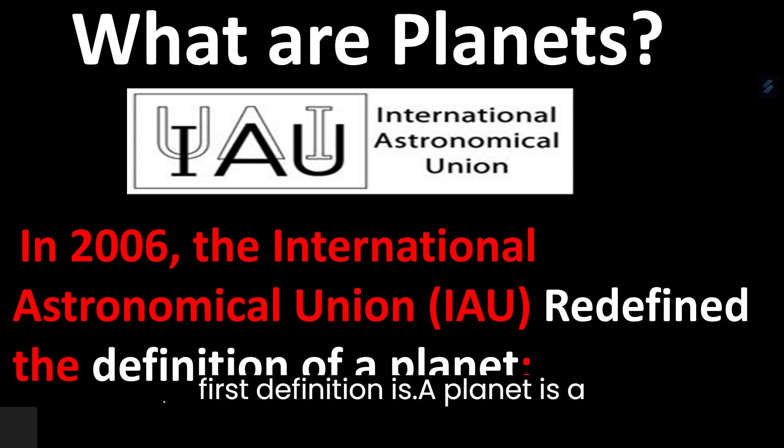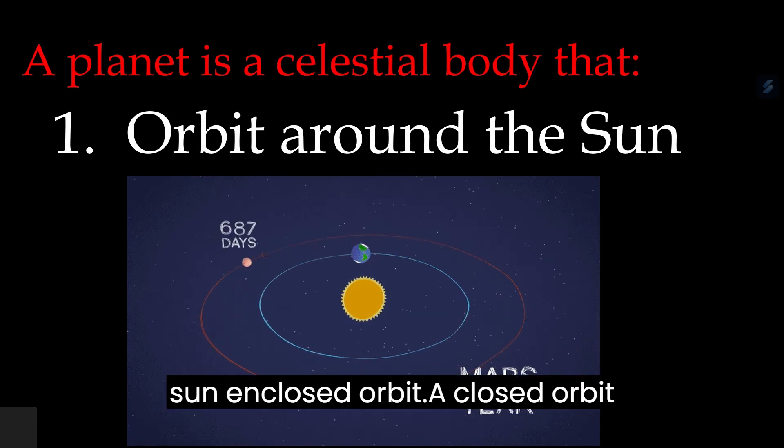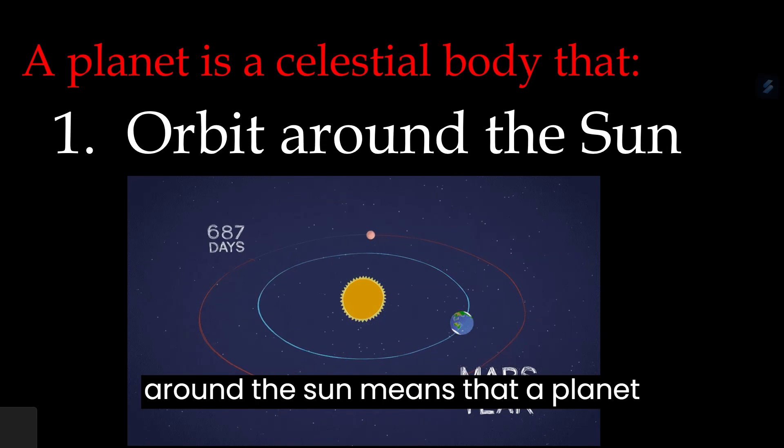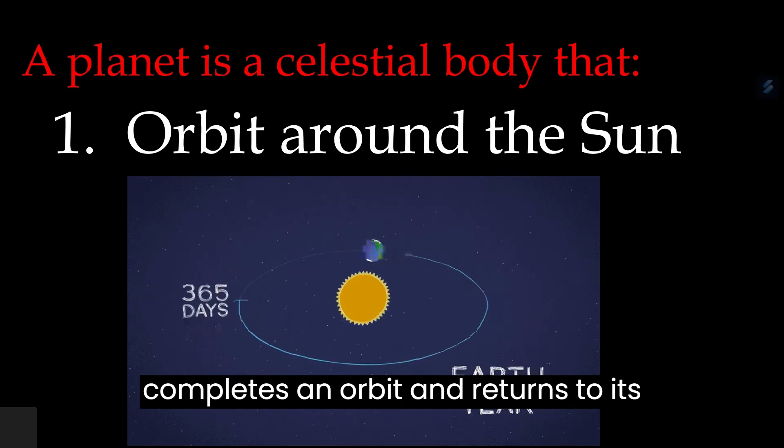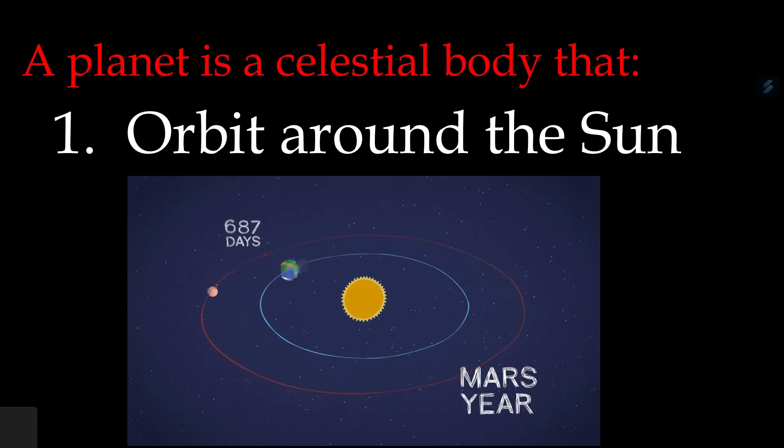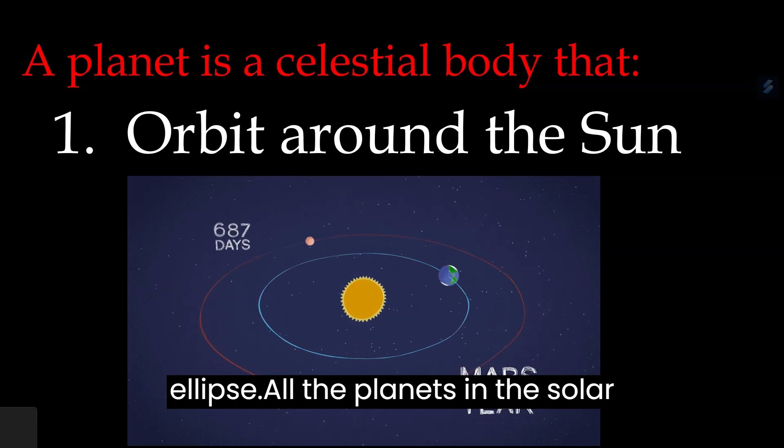The first definition is: a planet is a celestial body that orbits around the Sun in a closed orbit. A closed orbit around the Sun means that a planet completes an orbit and returns to its starting point without deviating from its path. This means that the orbit is a closed curve such as a circle or an ellipse.